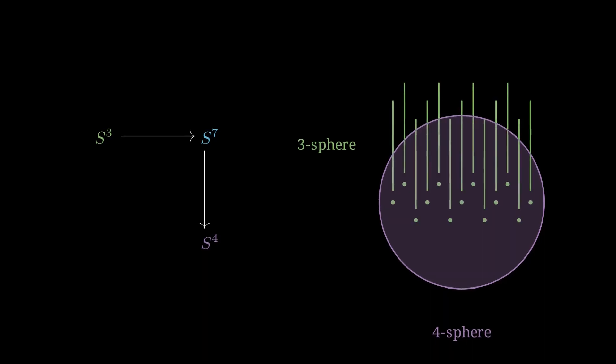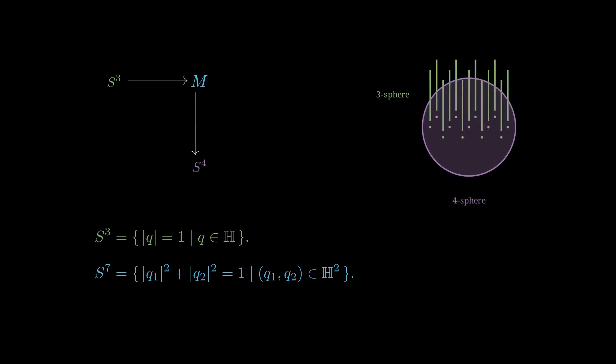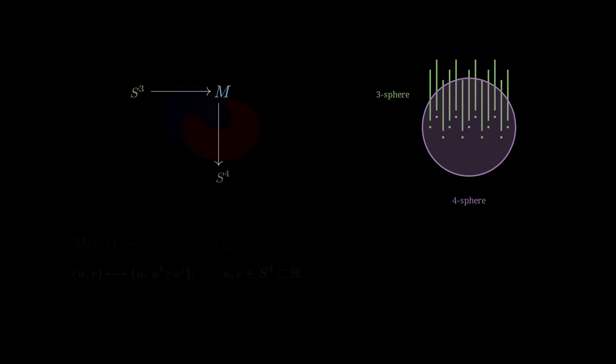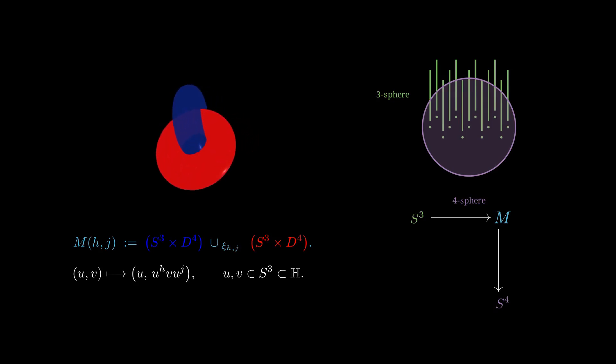Think of the three-sphere as the set of unit quaternions, then the seven-sphere can be described as all pairs of these quaternions with total norm one. More generally, for each pair of integers H and J, we have M(H,J), the total space of fiber bundles with fiber S³ and base S⁴. Constructed by gluing together two copies of a seven-dimensional solid S³ × D⁴ along their common boundary S³ × S³. The gluing map uses the quaternion multiplication, twisting the fibers by the pairs of integers H and J, which we will show later in the simulation.